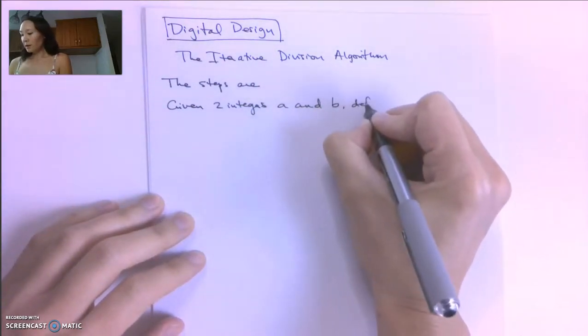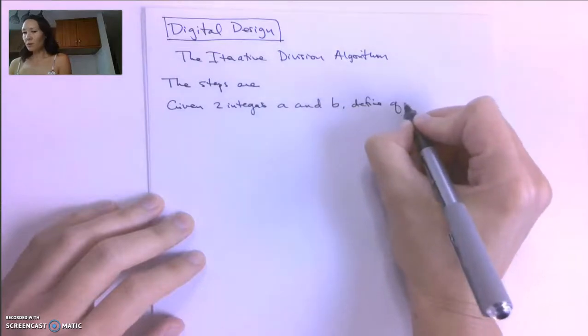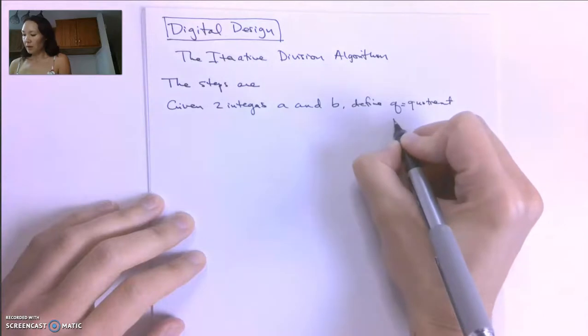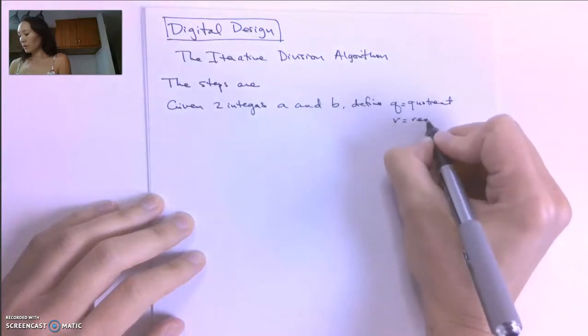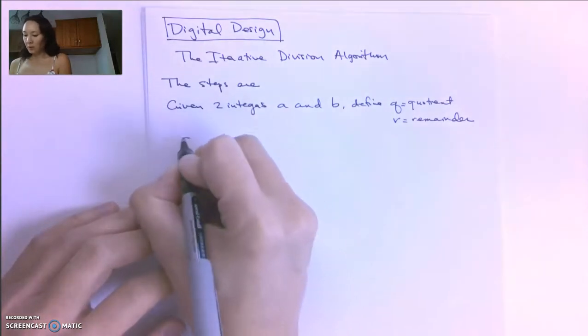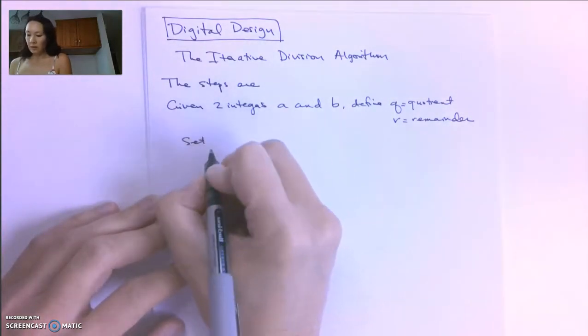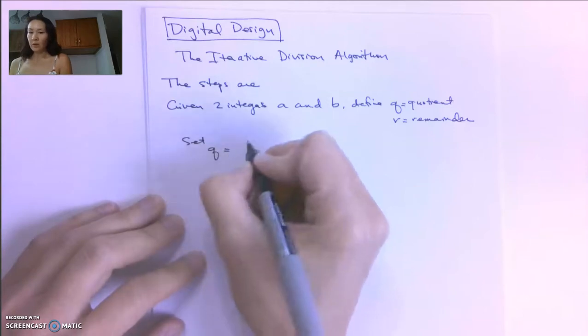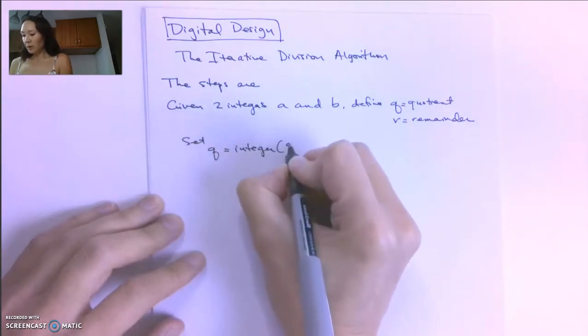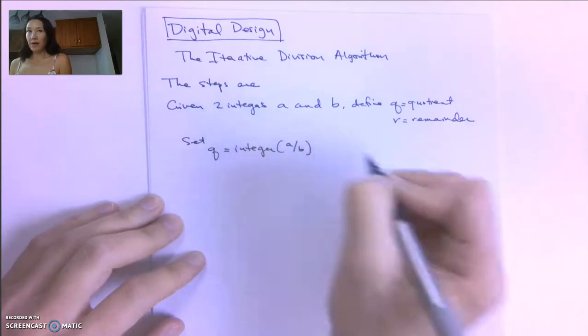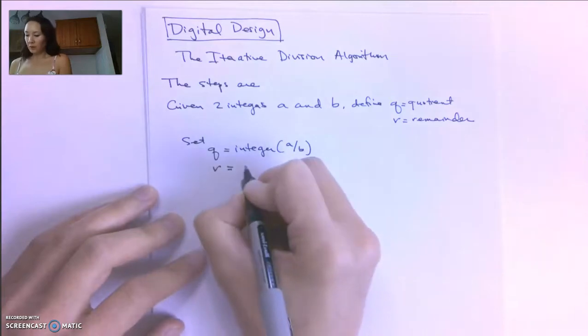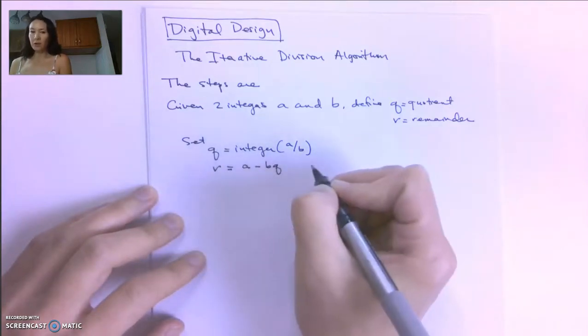we're going to define Q to be the quotient and R to be the remainder. So the first thing we want to do is set Q equal to the integer part of A divided by B. And then we're going to set R equal to A minus BQ.